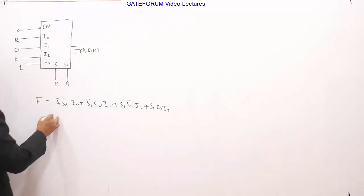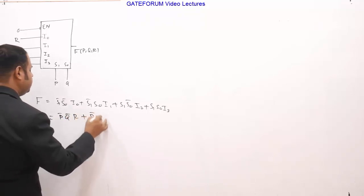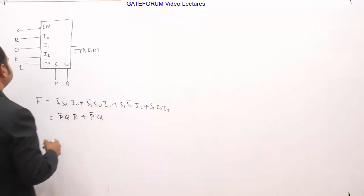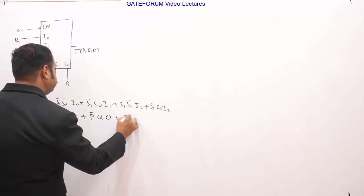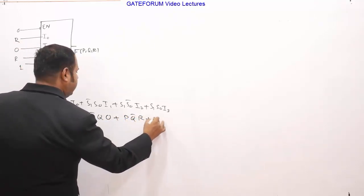So here, S1 is P and S0 is Q, and correspondingly I0, I1, I2, I3, let us substitute this here. So this is P bar, Q bar, I0 is R. P bar, Q, I1 is 0. P, Q bar, I2 is R. And PQ, I3 is given 1, right?